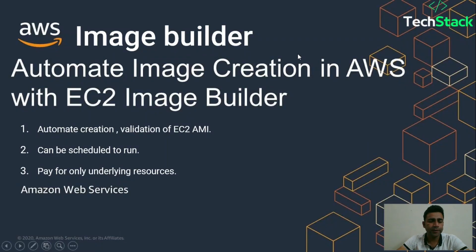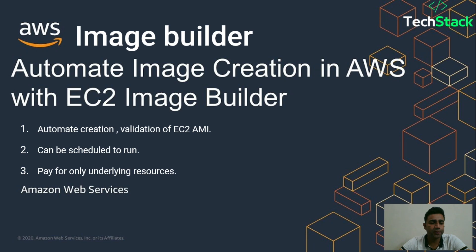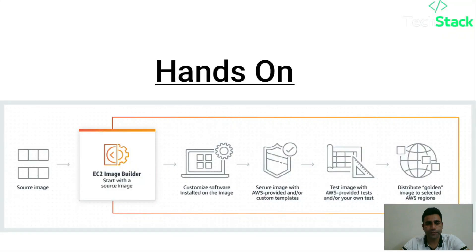The next topic in our EC2 instance storage types is Image Builder, which is used to automate the creation and validation of EC2 AMIs. It can be scheduled for future runs using cron jobs, run manually, and you only pay for the underlying resources used.